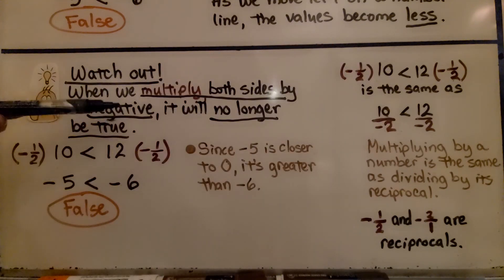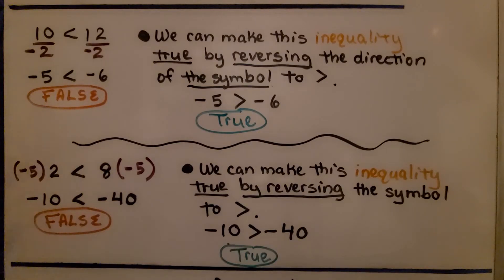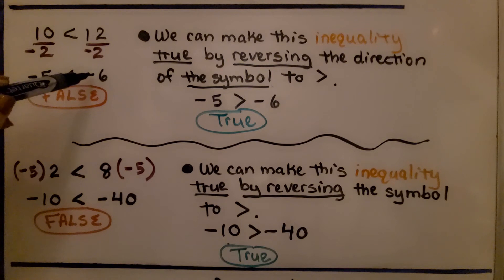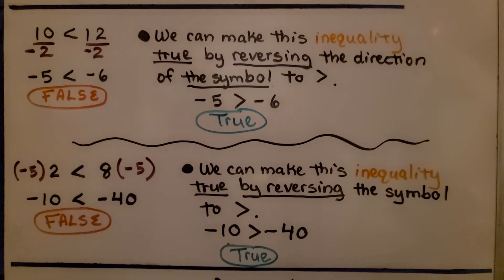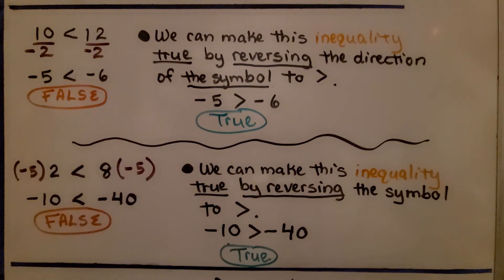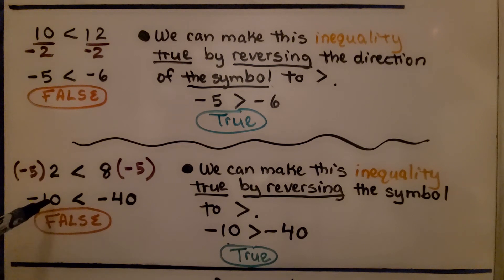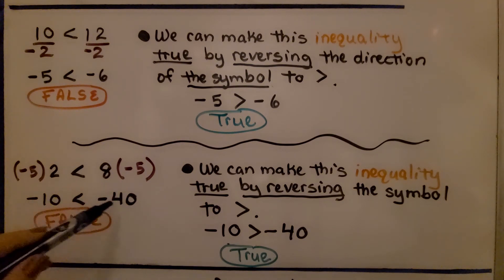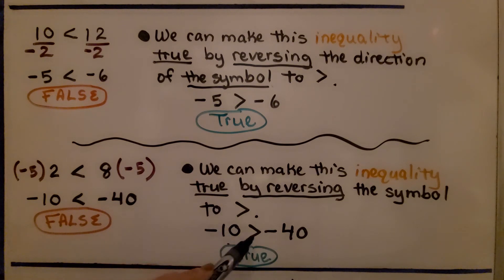When we divide or multiply by a negative, the inequality will no longer be true — but there is a way we can make it true. When we divided positive 10 by negative 2 we got negative 5, and dividing positive 12 by negative 2 gave us negative 6, making the inequality false. We can make it true by reversing the direction of the symbol to greater than. Similarly, if we have 2 is less than 8 and multiply both sides by negative 5, we get negative 10 is less than negative 40 — that's false. We can make this true by reversing the symbol to greater than.